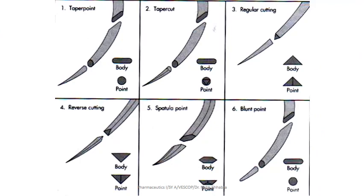Needle points are of two types: cutting and round. Cutting points are of two types — reverse cutting and taper cutting. Cutting needle points are designed to cut through thick tissues or skin. The difference between reverse cut and taper cut is that in reverse cut the cutting edges are along the convex surface, whereas in taper cut the cutting tip is around the needle shaft. Round needle points have no cutting edges, but the remaining portion of the shaft is oval to prevent rotation or displacement of the needle within the jaws of the needle holder.